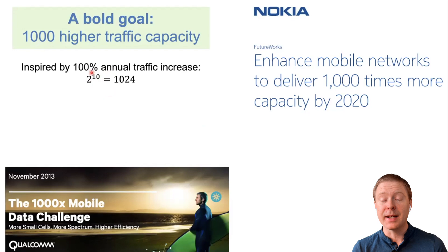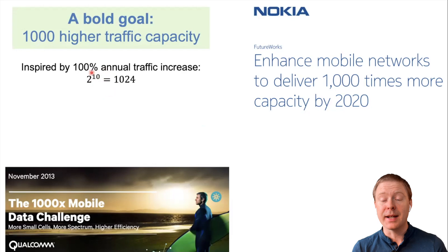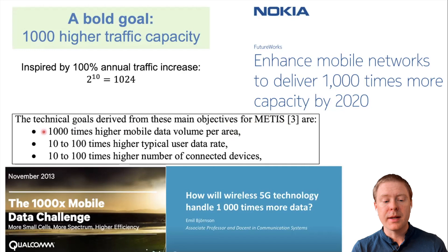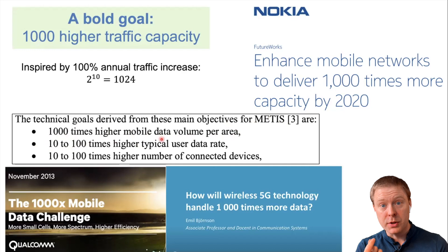Having a goal of building a technology capable of 1000 times more capacity is what drives how we build new technologies. There were joint efforts like the European-funded METIS project, which set out the goals for 5G: a thousand times higher mobile data volume per area, 10 to 100 times higher typical data rates for users, and 10 to 100 times more connected devices. Multiplying 10 by 100 gives a thousand, so this makes sense.